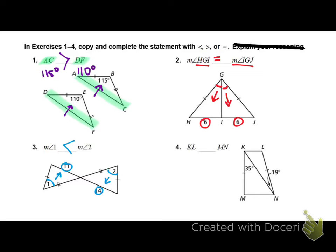And then last, you could probably just look at it. We have the length of KL, and we're comparing it to the length of MN. KL is across from 19 degrees, whereas MN is across from 35. So less than, greater than, or equal to. Less than. Wonderful.